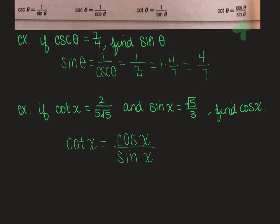Then we can replace it with the values that we have. So we know that the cotangent of x is two over five root five. We don't know what the cosine of x is, and we know that the sine of x is root five over three.